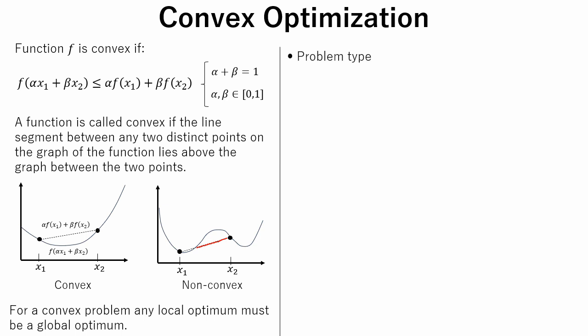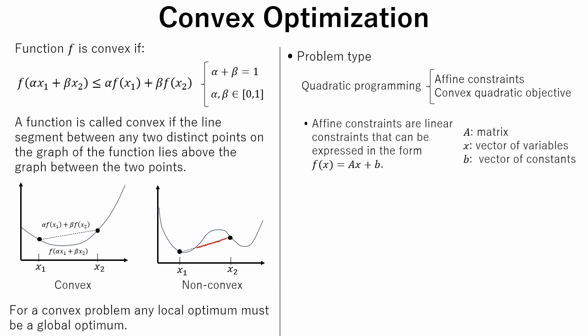There are several types of convex problems. Our problem is classified as quadratic programming problem. This problem consists of affine constraints and a convex quadratic objective. Affine constraints are linear constraints that can be expressed in this form. Quadratic objective means that terms up to the second power of the variables are involved.